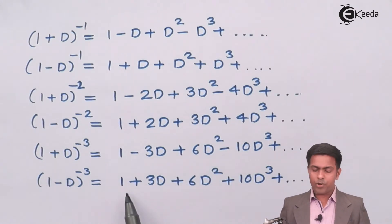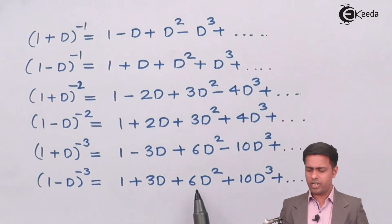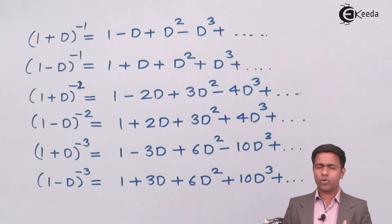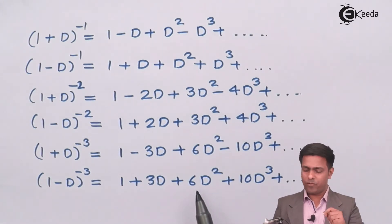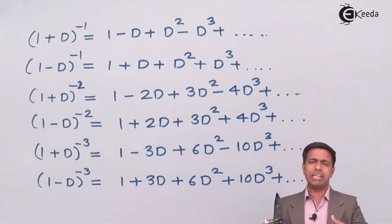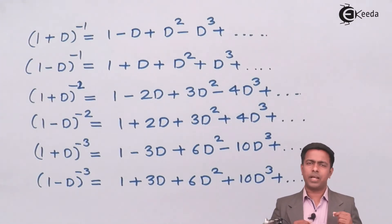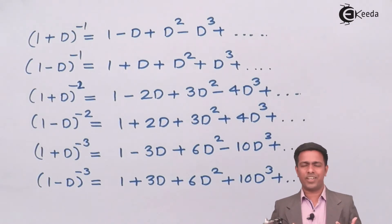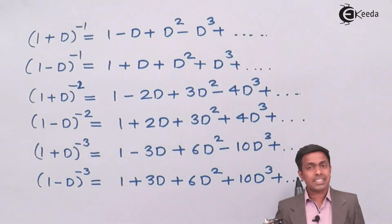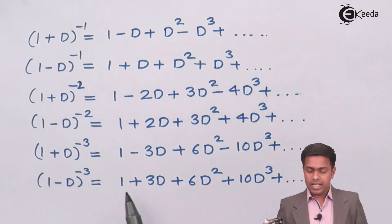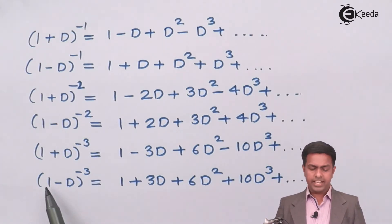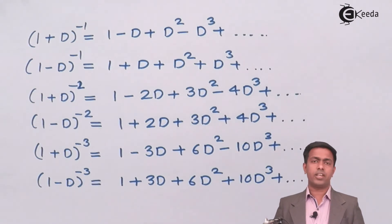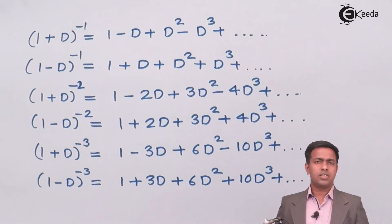For (1 ± D) raised to minus 3, same rule applies for signs. The power of D increases by 1: D raised to 0, D, D squared, D cubed, and so on. The coefficients follow a pattern — for minus 3 power they are 1, 3, 6, 10, and so on. We normally write up to D cubed because the highest power in a typical problem is cubic, giving three derivatives with the fourth derivative being zero. For further terms, apply the binomial theorem with a = 1, b = D, and n = −3.